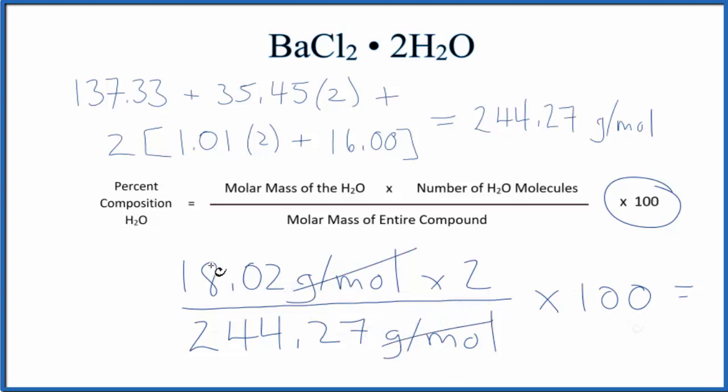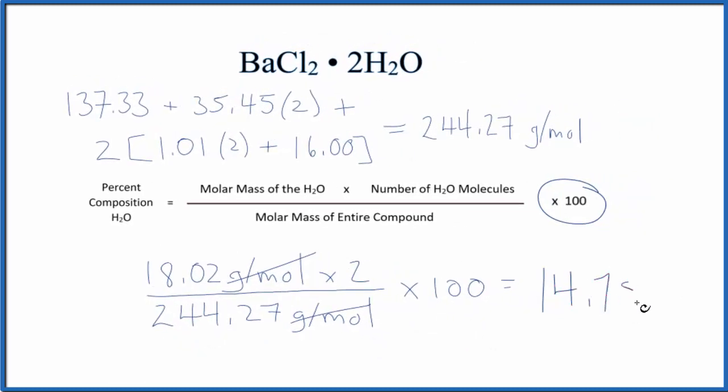So we end up with 14.75%. And what this number means is that if we have a mass of barium chloride dihydrate, 14.75% of the mass is going to be due to the water molecules.